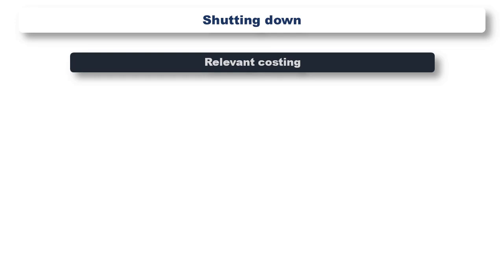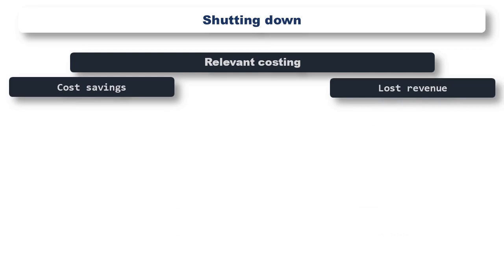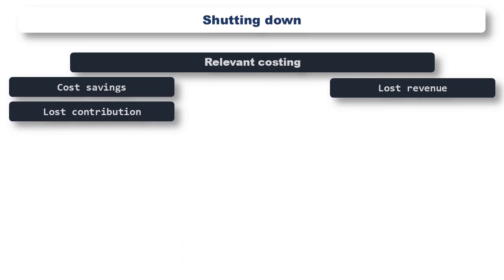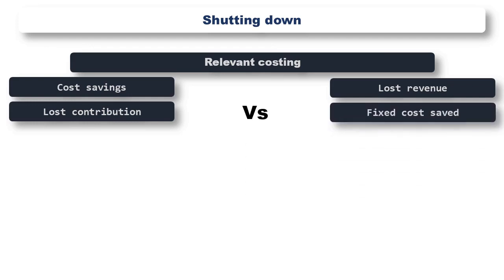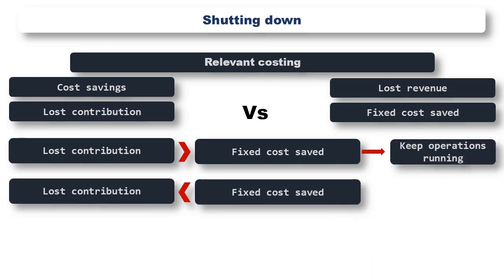The next area we are going to look at is the decision regarding shutting down part of a business's operations. We are going to use relevant costing again here to determine whether the closure of a loss-making part of our business has a positive financial impact on the business as a whole, or if it makes more sense to keep the product line or department running. We need to calculate the lost contribution — that is sales minus variable costs — resulting from the closure, and compare this to the fixed costs we would save through the closure. If the contribution lost is higher than the fixed costs saved, it makes more financial sense to keep the operation running. Whereas if the fixed cost saving is higher than the lost contribution, it makes more financial sense to close the operation.